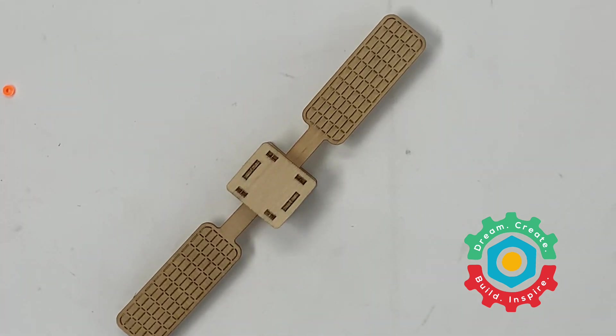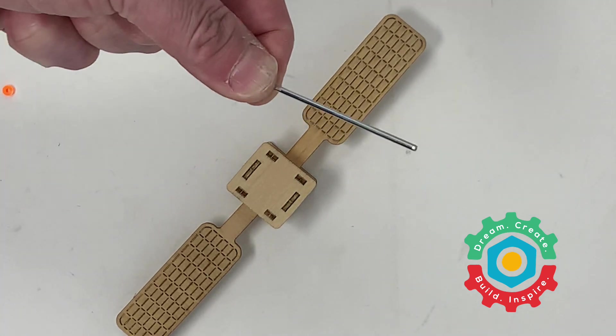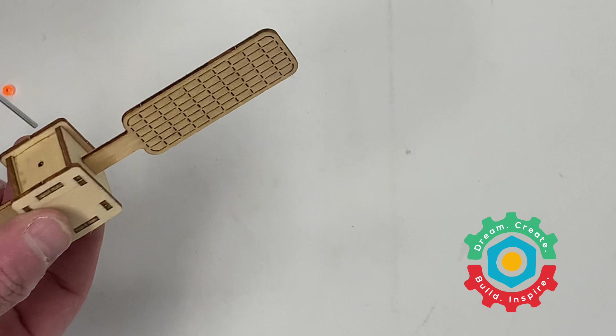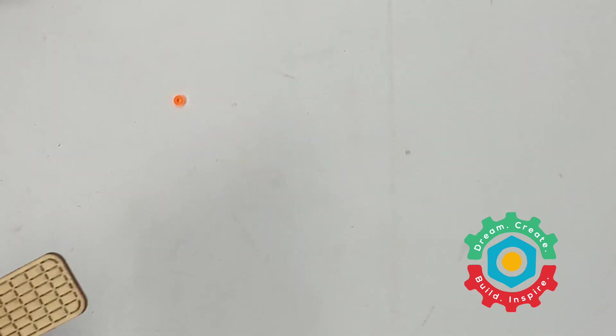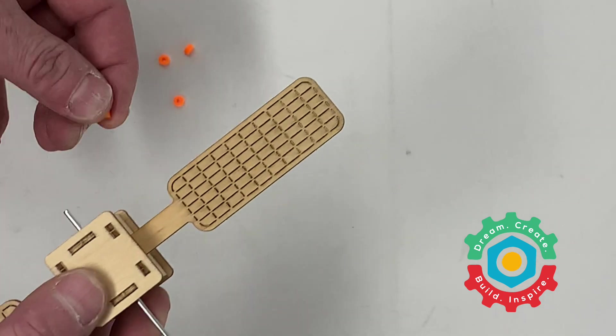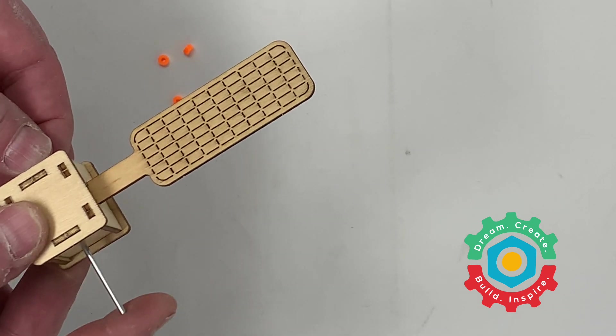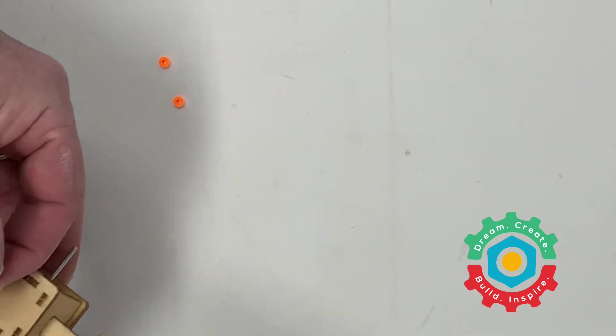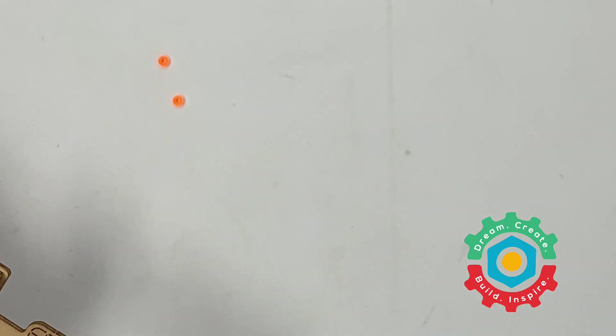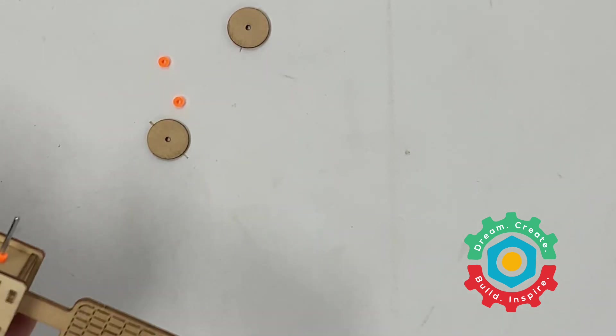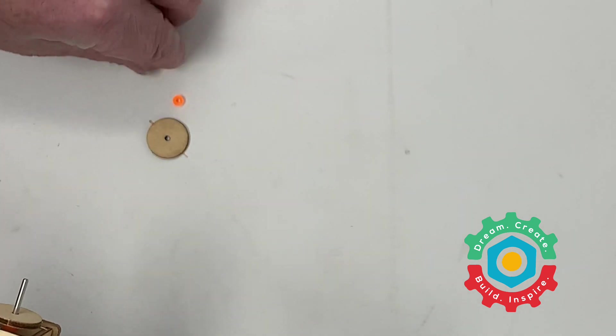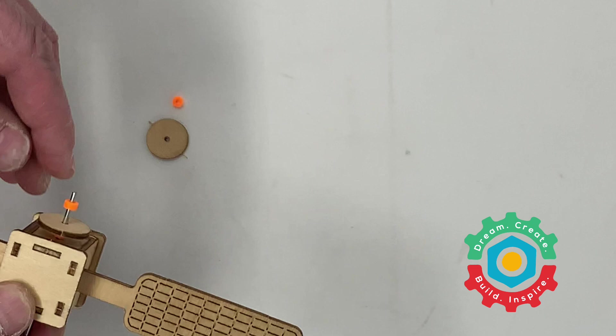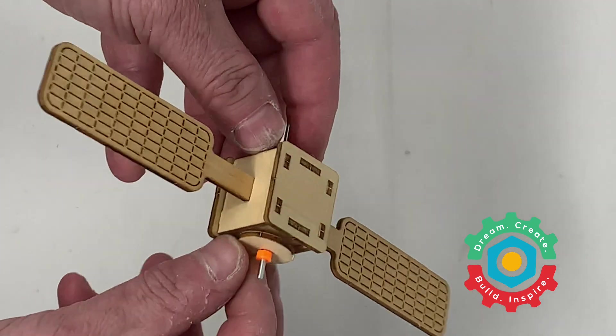Now we are going to put in the support rods. We'll take one of these and insert it through here. Then we'll take a few of our stoppers here, orange stoppers, we should have plenty of those, and we'll just insert those like so. So there'll be one on each side to prevent the rod from passing all the way through. Then we're going to take our discs and insert them here and take another one of the orange stoppers and place it in there.